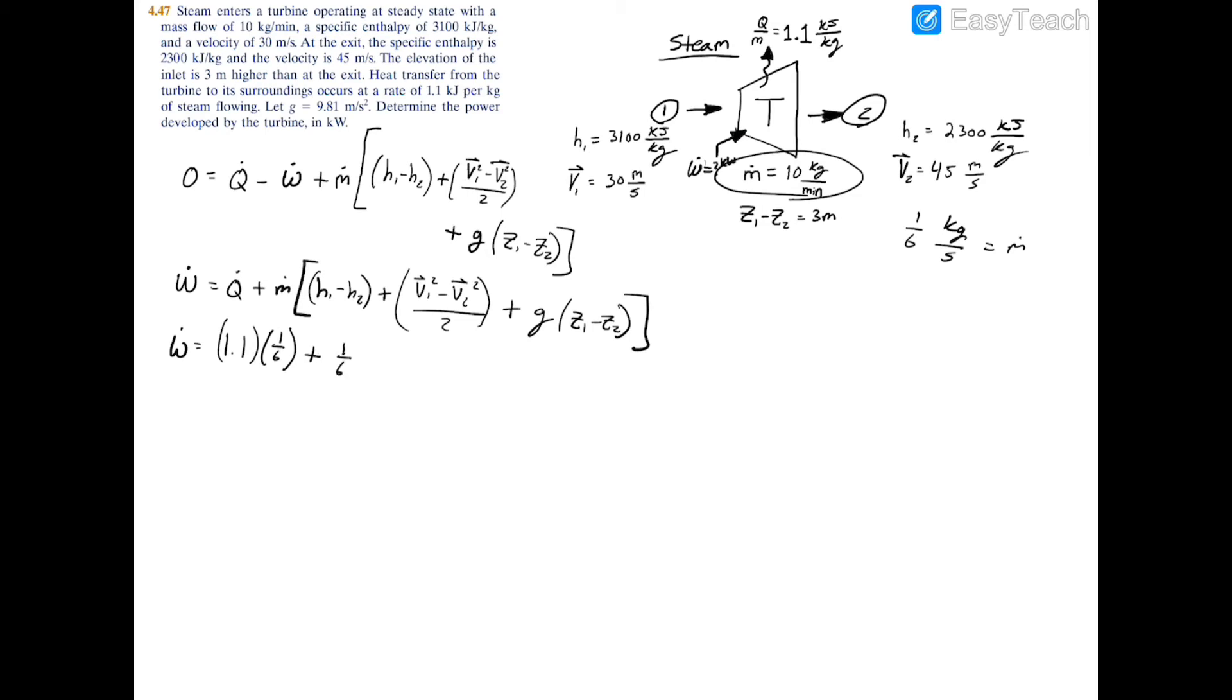Now we'll add the mass flow rate of one sixth times all of this here. We have h1 was 3100 and h2 was 2300, both in kilojoules per kilogram. When you multiply by kilograms per second, kilograms cancel out, you'll have kilojoules per second, which is a kilowatt.